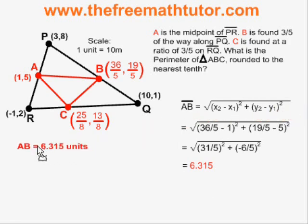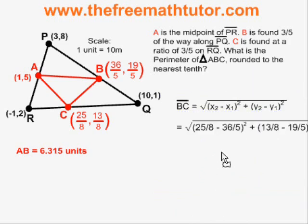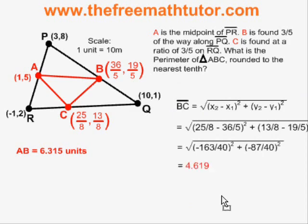Now let's move on to finding the distance BC. Plugging the x and y-coordinates of B and C into the distance formula, I simplify and find that BC is 4.619 units in length, again rounded to the nearest thousandth. I record this.